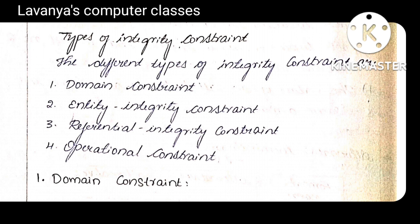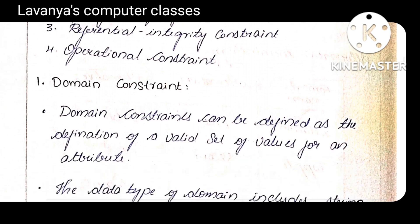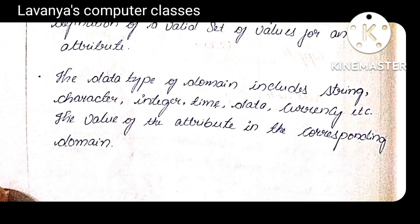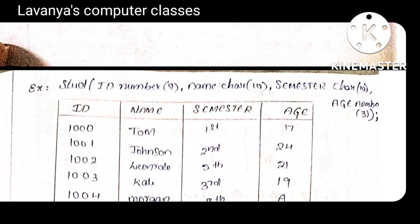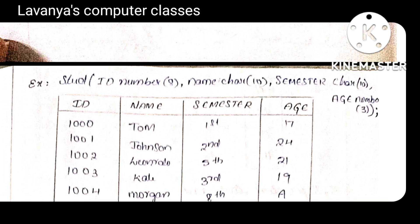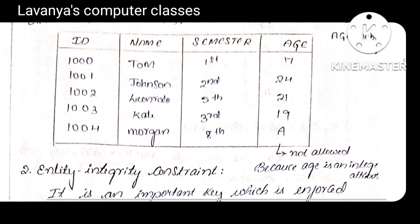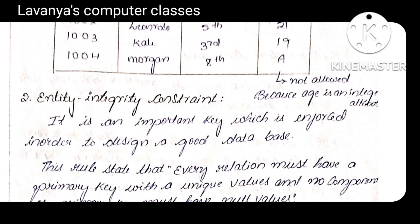First one is domain constraint. Domain constraint means the name of the field, its data type, and its size. Domain constraint can be defined as the definition of a valid set of values for an attribute — what type of values are accepted and what is the range. Example: student_ID is the name of the field, NUMBER is the data type, and a certain size defines its domain. If the last row is entered with a character like 'A' instead of a number, it is not allowed — it gives a constraint error because the field compulsorily accepts numerical values only.